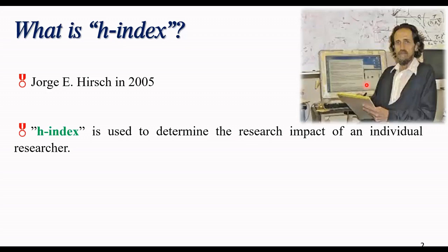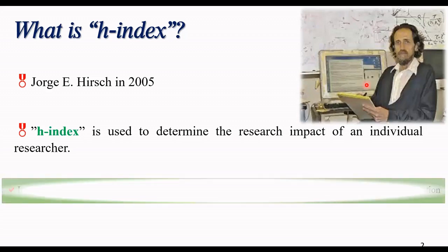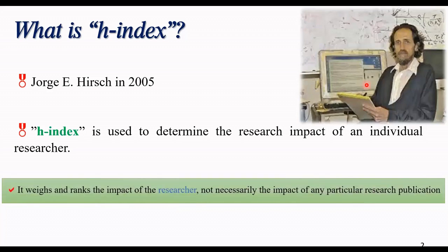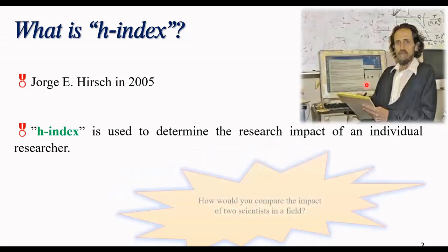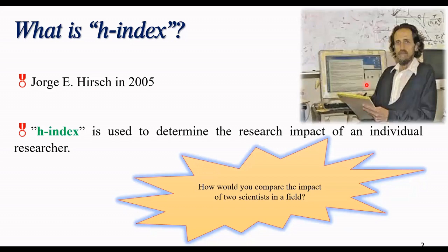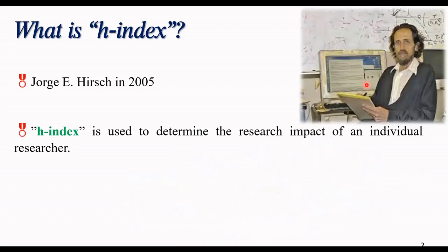This index is used to determine the research impact of an individual researcher. This is a way of gauging the productivity of a researcher. It weights and ranks the impact of researcher, not necessarily the impact of any particular research publication. How would you compare the impact of two scientists in a field? Or what if you had to decide which one would get a grant? One method is the H-index.